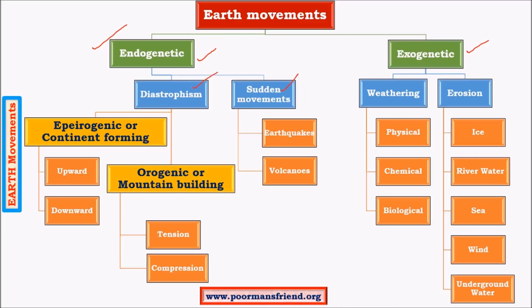Sudden movements, as the name suggests, are sudden in nature — like earthquakes and volcanoes. Diastrophic movements are slow movements that happen over millions of years; the changes they bring are significant but take place very slowly.